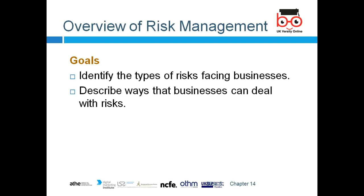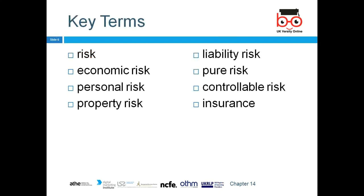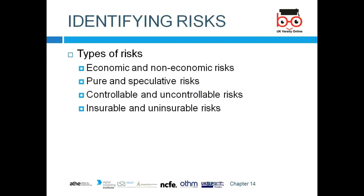In terms of risk, we need to plan how we can minimize it. Risk includes probability of occurrence — economic risk, personal risk, property risk, liability risk, labor risk. Insurance will help reduce identified risks. We need to identify the types of risk and try to eliminate them.